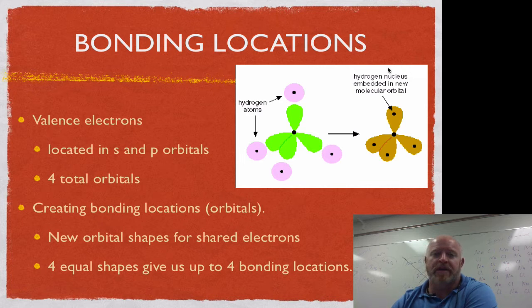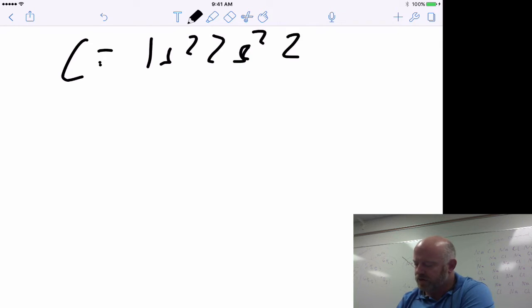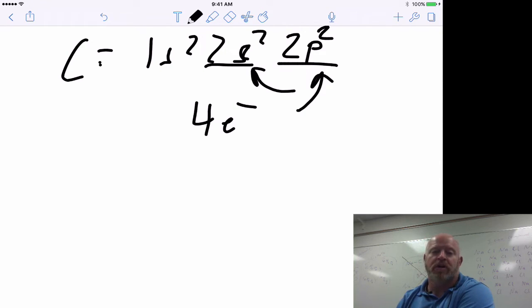If you take a look at a typical atom, we have in its outer energy level, or the valence energy level, these s and p orbitals. If I take something like carbon, carbon has an electron configuration of 1s2 2s2 2p2. In its second energy level in the s and p orbitals, we have a total of four electrons for carbon, or basically four valence electrons. These four valence electrons fall in the s-shaped orbital and a p-shaped orbital.